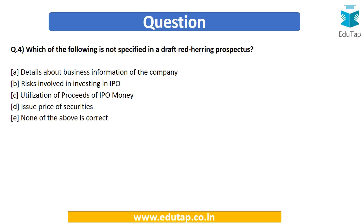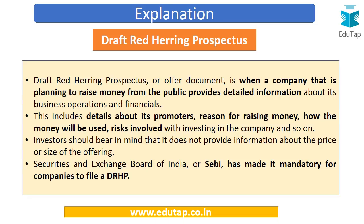Next question: which of the following is not specified in a Draft Red Herring Prospectus? Options are: (1) details about the business information of the company, (2) the risk involved in investing in the IPO, (3) utilization of proceeds of IPO money, (4) issue price of the securities, or (5) none of the above is correct.